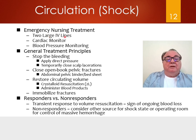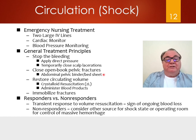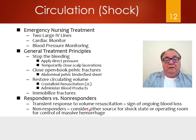What do you do? Two large IV lines. Monitor the heart and blood pressure. Stop the bleeding — apply direct pressure to whatever you see bleeding. Temporarily close scalp lacerations. If there's an open book fracture of the pelvis, bind it together with a bed sheet. Restore circulatory volume: crystalloids are by far the most useful — get two liters of saline into the patient as soon as possible. Blood products can come later. All fractures should be immobilized. If the patient responds to volume resuscitation and then goes into shock again, there's ongoing blood loss. If they don't respond at all, they likely have massive hemorrhage and probably need to go to the operating room immediately to survive.